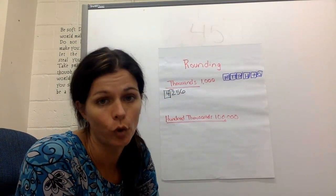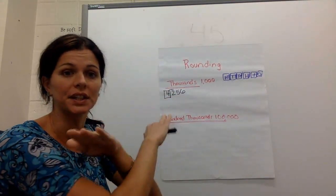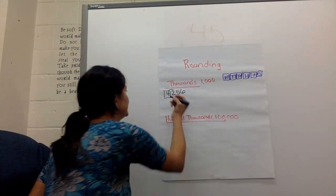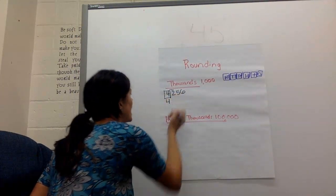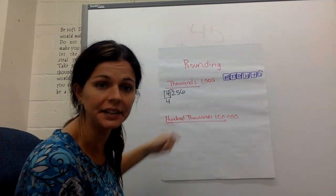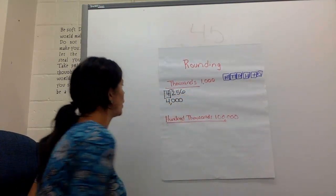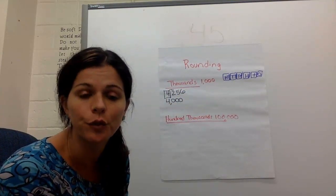So 4 below, let it go. So we're going to let 4 go. It's going to stay as 4. So I write it down underneath. Everything after the box turns into zeros. So that number was rounded to 4,000.